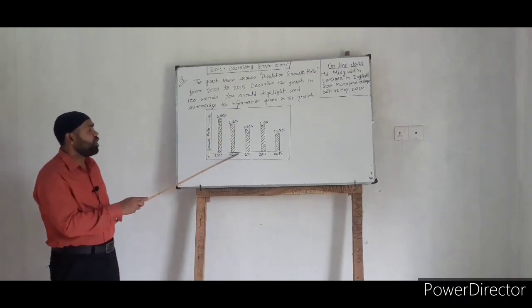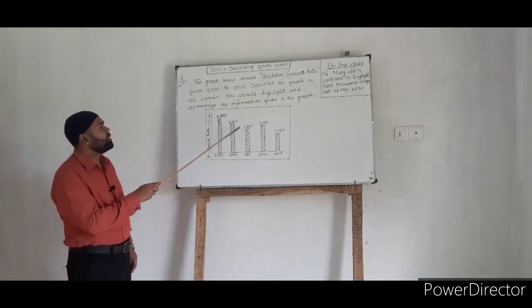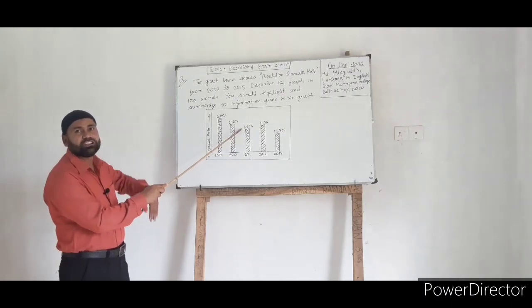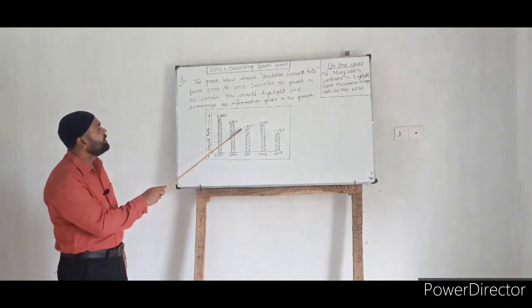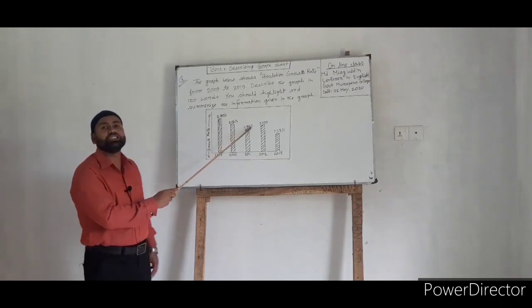The graph also shows that in 2011, the population growth rate again decreased, again went down or slowed down, and it was 1.90 percent.